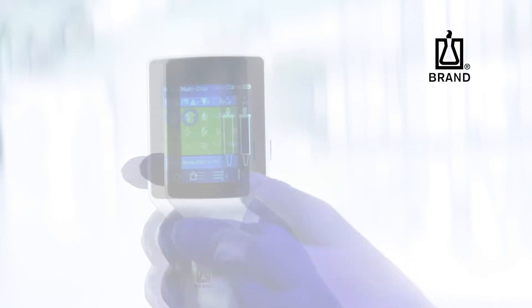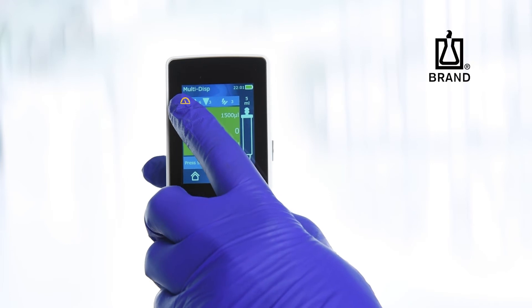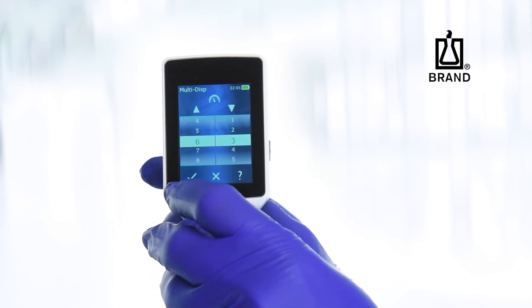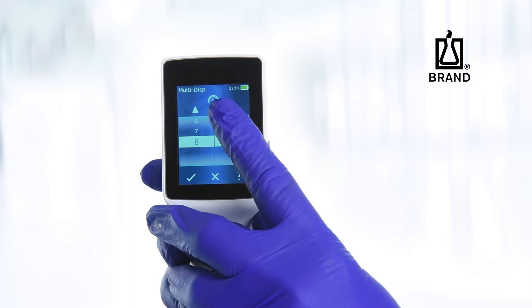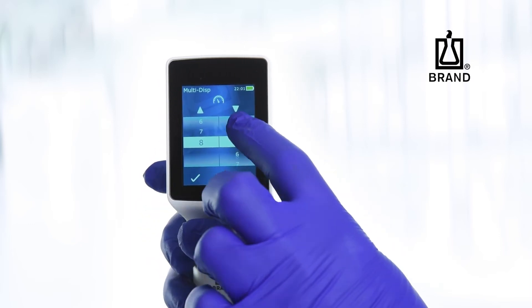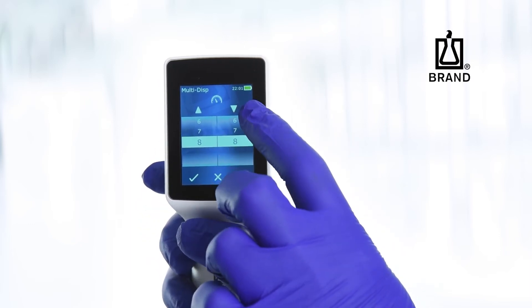To set the desired aspirating and dispensing speeds, tap the speedometer icon. Set the desired aspirating and dispensing speeds by swiping vertically up or down, then tap to confirm.